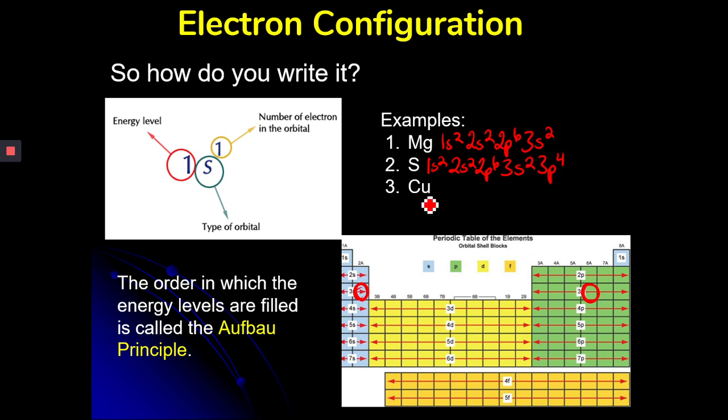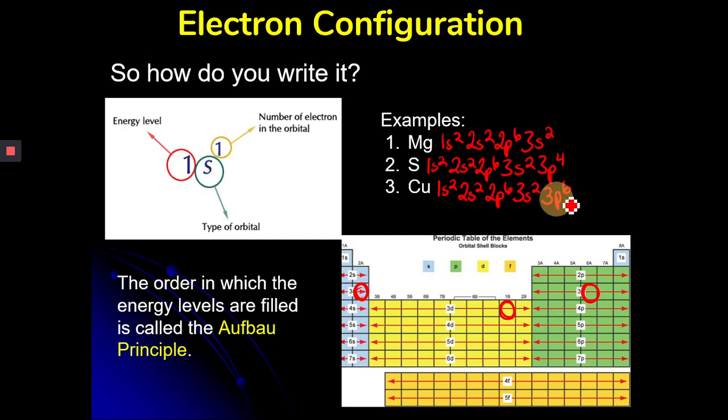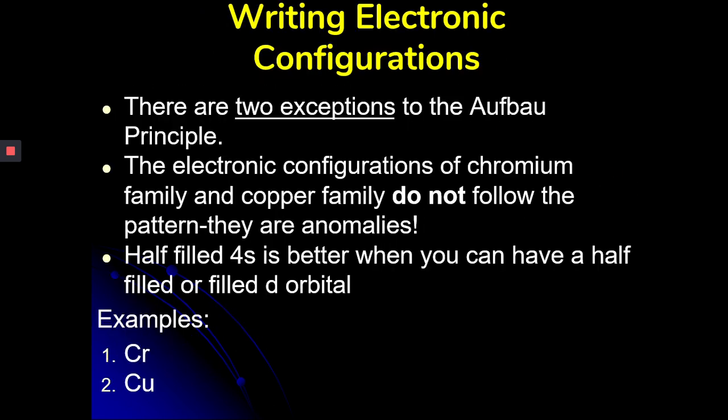Copper, which is number 29 on the periodic table, is right here. So we would say 1S2, 2S2, 2P6, 3S2, 3P6. That puts us right here at argon, and then we would say 4S2. Remember, the D block is one less than the row, so this is 3D, and we would count our way across, and we would have 3D9. Now, that's the way we did it last year, and that's fine. That's the way you do do it, except there are two exceptions. The two exceptions are when you're half-filled or close to being filled D.